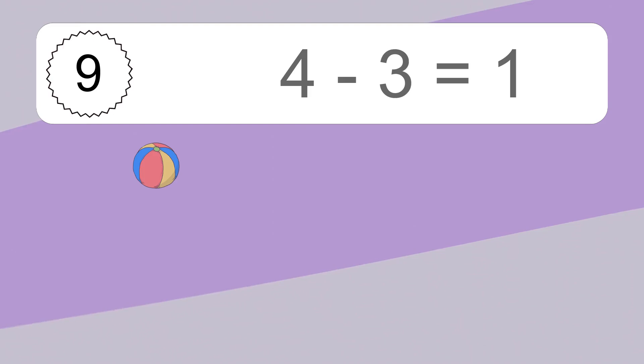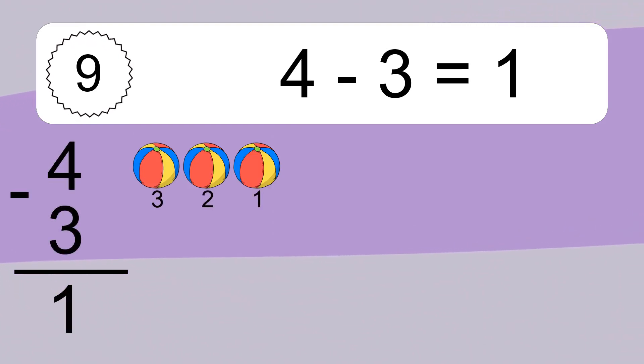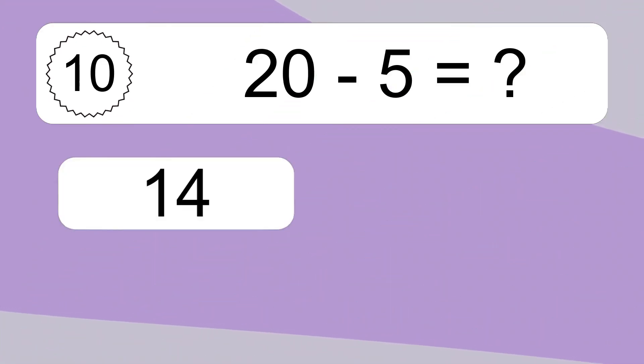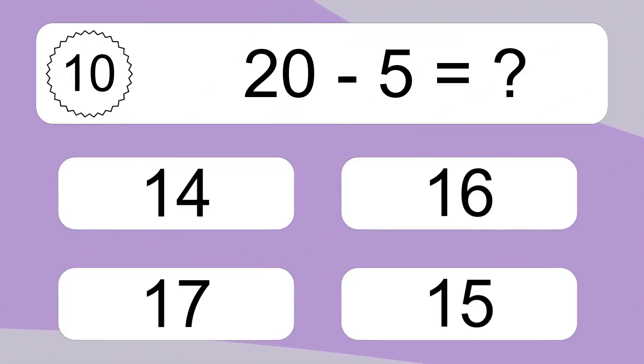4 minus 3 equals what? 4 minus 3 equals 1. Let's count it: 3, 2, 1.